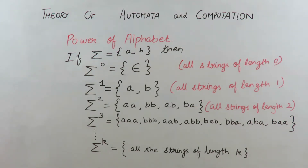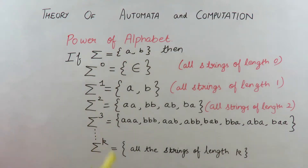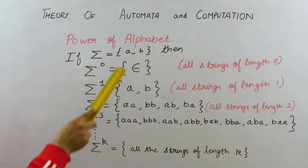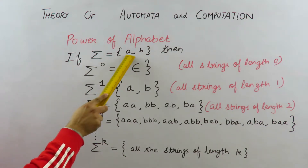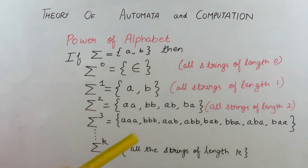Sigma raised to the power 2 will contain all the strings of length 2 from the set {a, b}. We have to make all possible combinations of length 2: aa, bb, ab, and ba. So these are all possible strings of length 2.